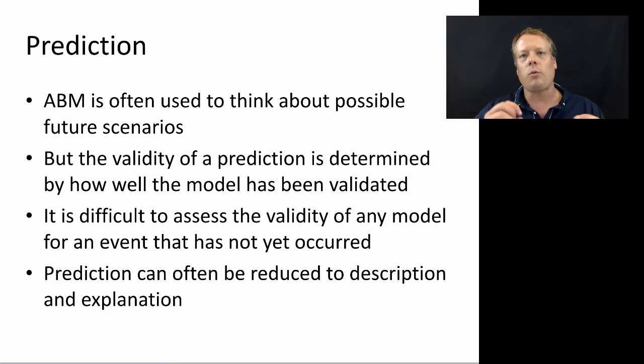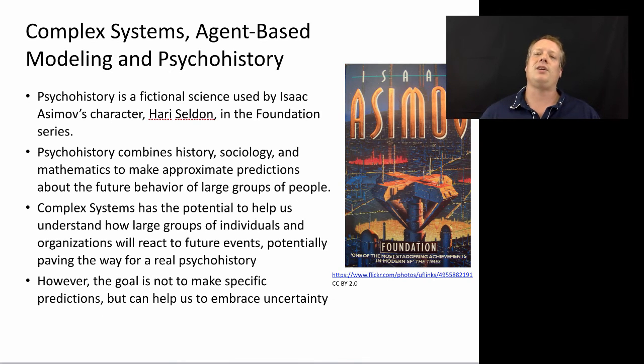A lot of times, what we actually mean by prediction is something like description and explanation. We want to describe and explain phenomenon that we've already seen, and then we want to see what the possible scenarios are that could come out of that model. And that actually brings me to one interesting thought I have about the future of agent-based modeling and complex systems in general.